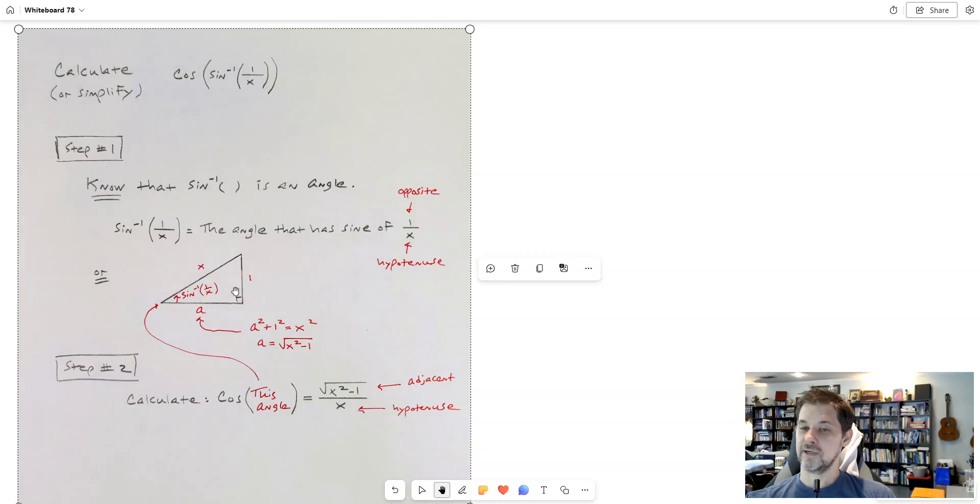So right triangle, so a squared plus 1 squared is x squared, revealing this side to be root x squared minus 1.